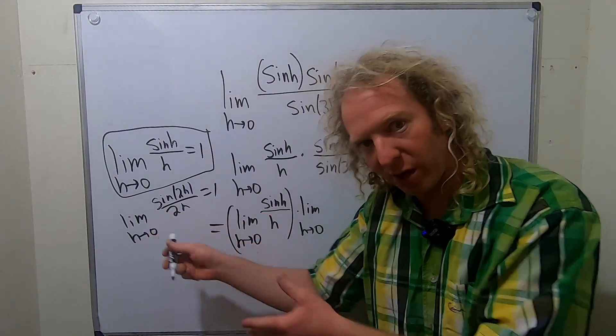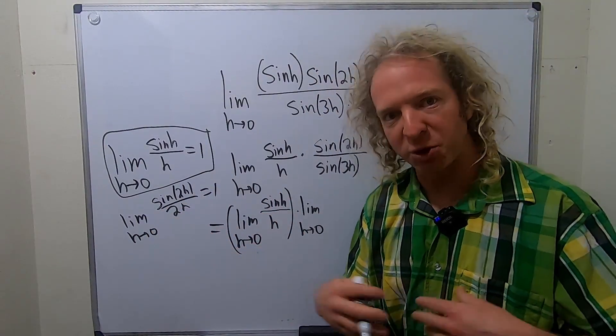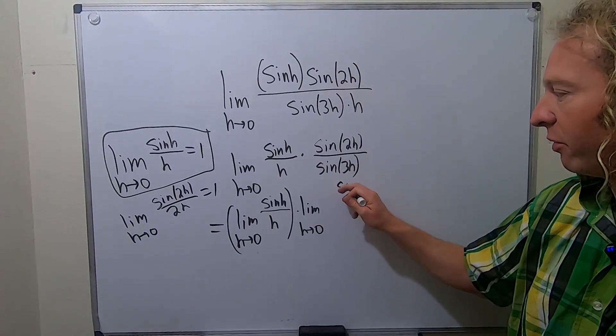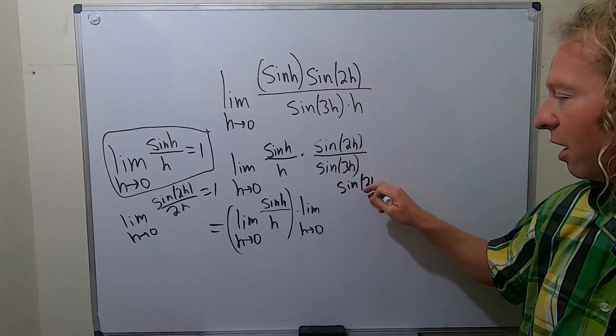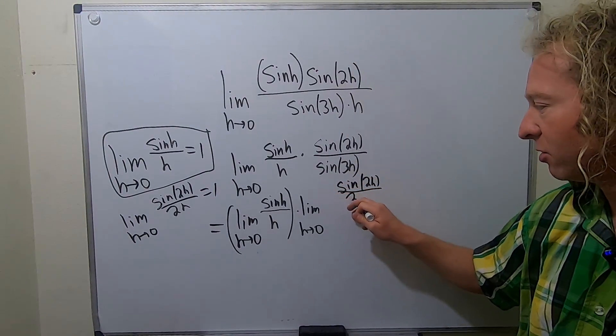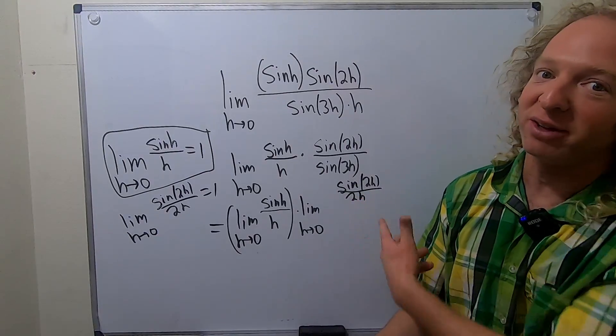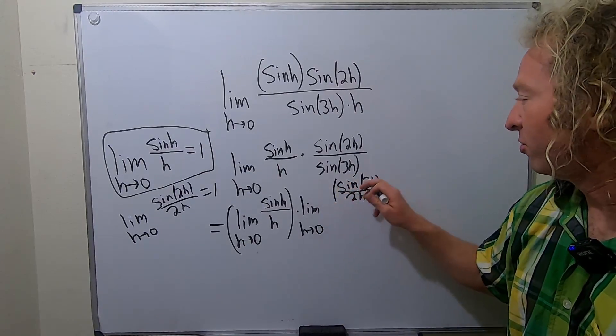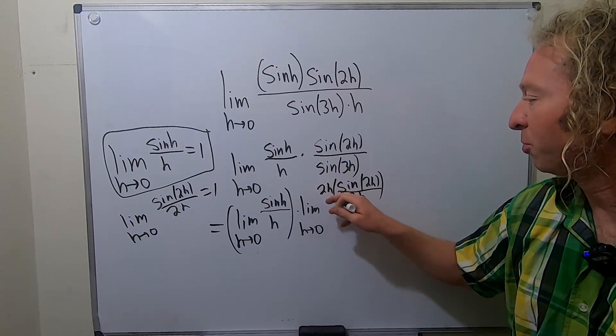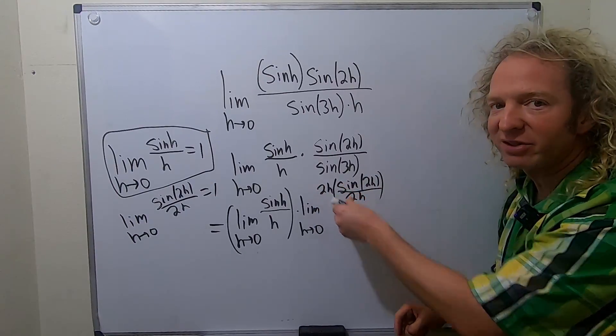It would be really nice if we had a 2h. So what we do is we just put it there, because we can do whatever we want, as long as it's correct. So I'm going to put it there. We're going to just do what we want. Now we've got to get rid of it. So we'll put a 2h here. So basically, we've multiplied by 1 in a clever way. We really haven't done anything.